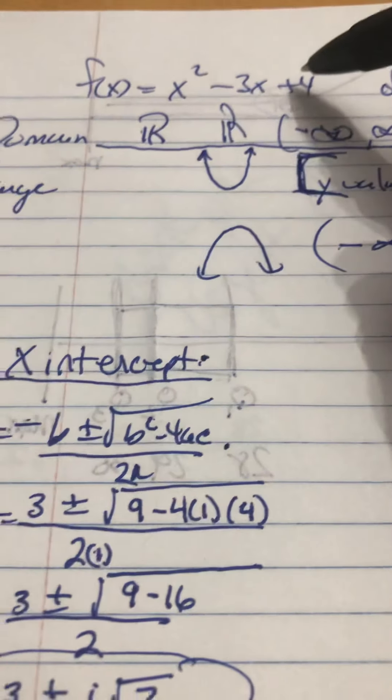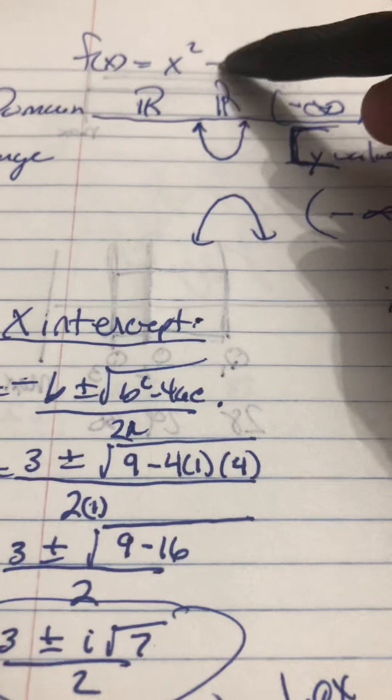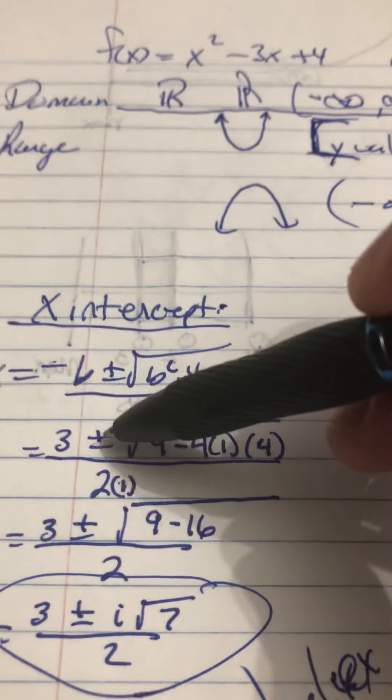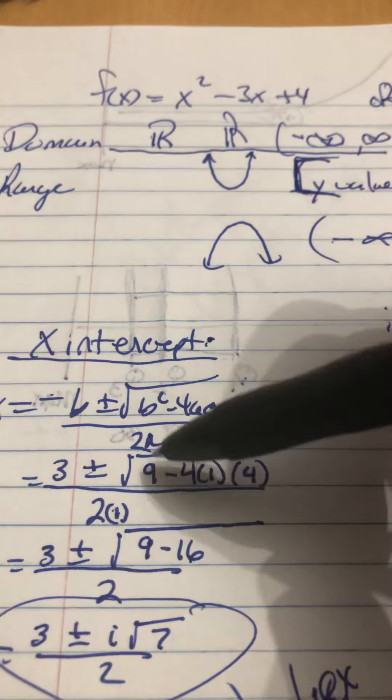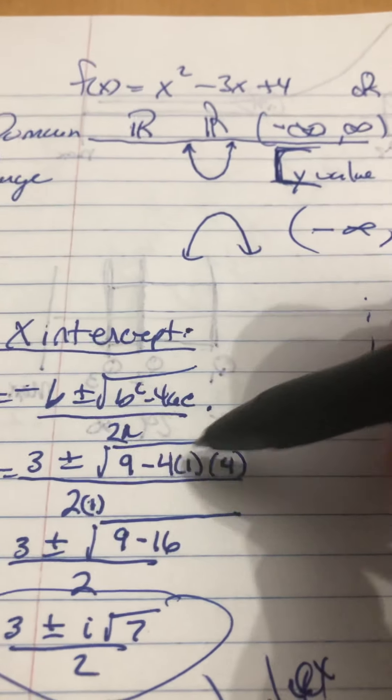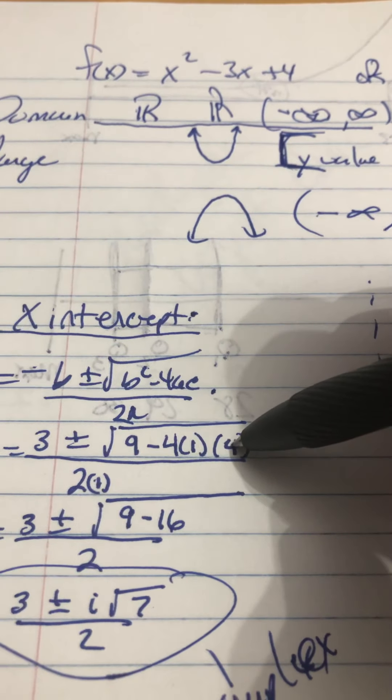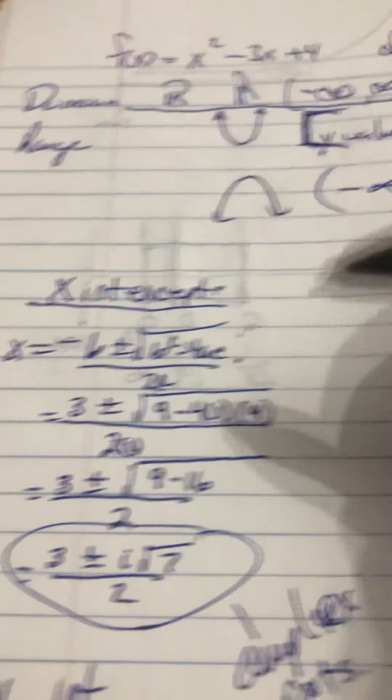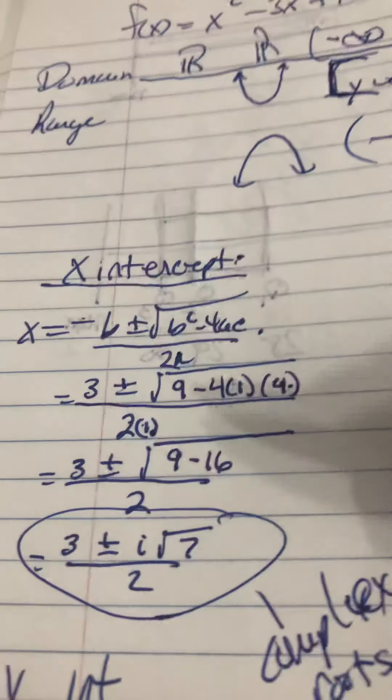And in this instance, so, the negative 3 up here comes in as a positive 3. You take the opposite of it. Plus or minus the square root of b squared. Well, negative 3 squared is 9. Minus 4 times a times c. All over 2 times a. And that's my 1 from my a, 1 from my a, 4 from my c.